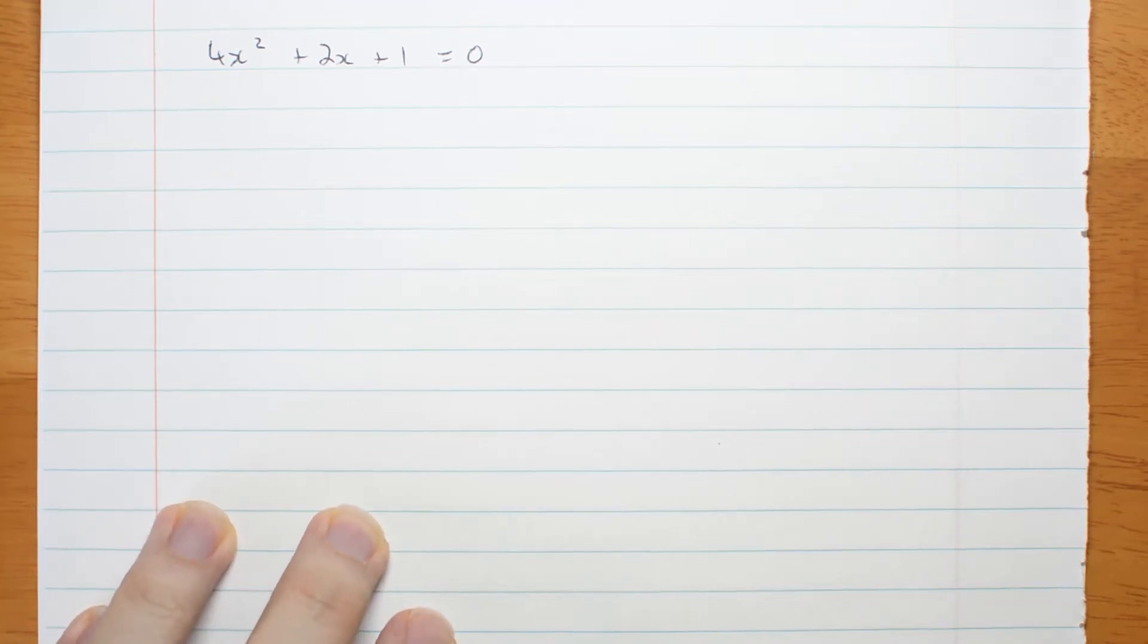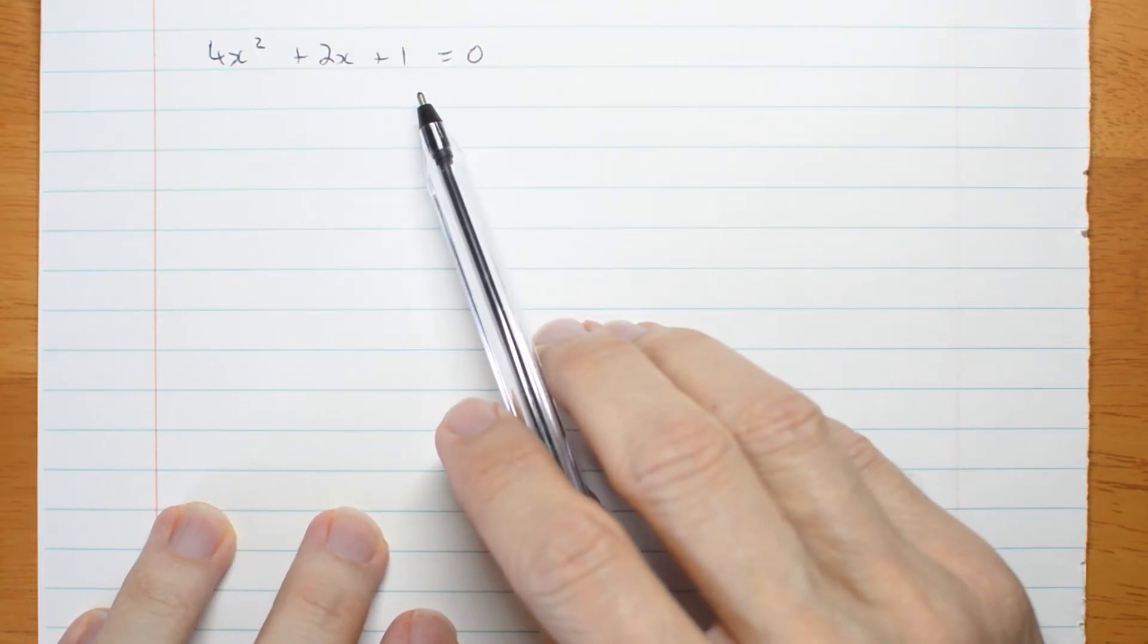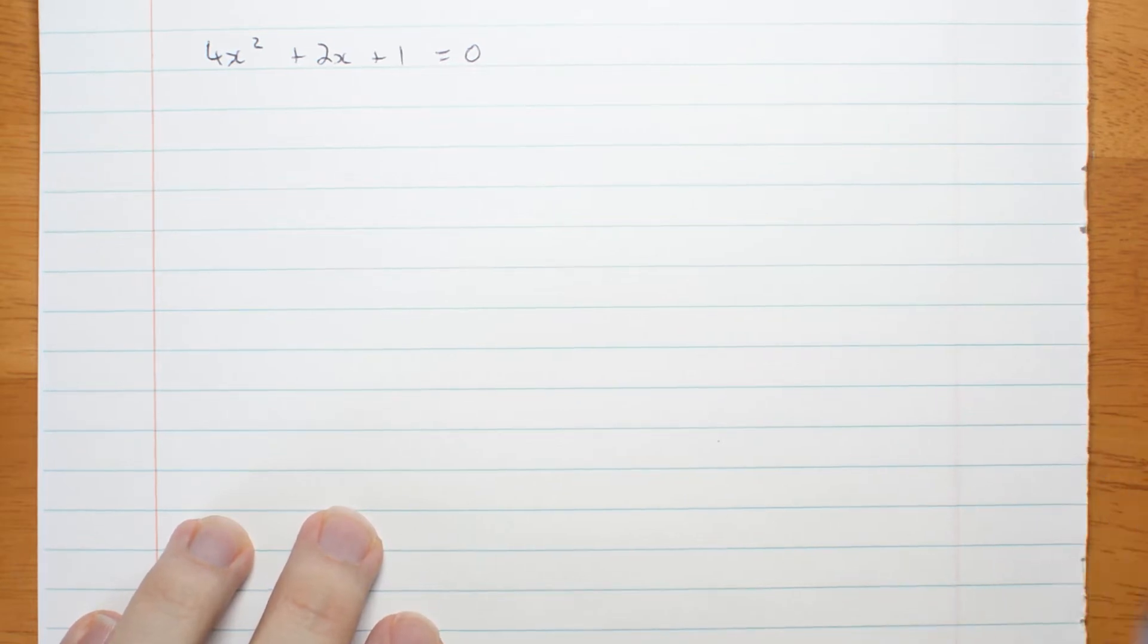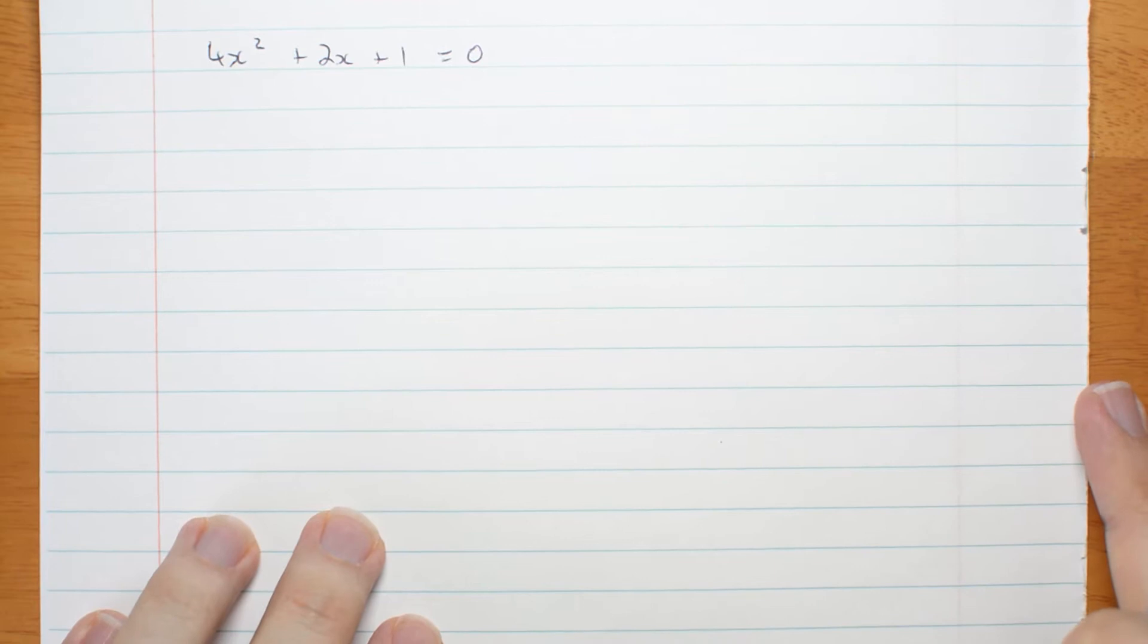So let's put this together and try solving some real quadratic equations with complex roots. The method is the same. We're going to factorize and then use the null factor law. The only thing that's different is that factorizing is going to involve complex numbers.